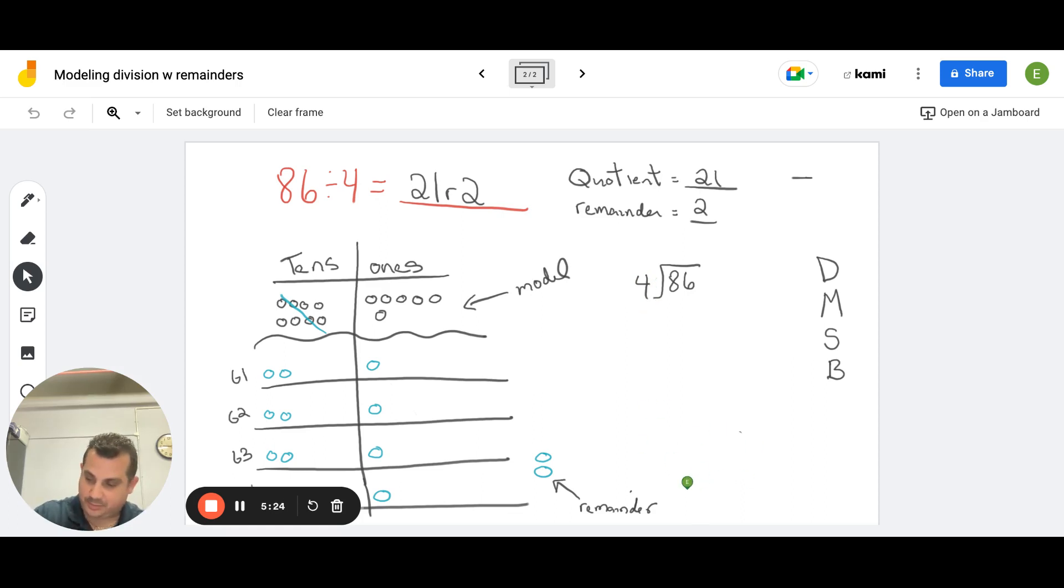So let's do our steps. Our first step here is divide. We're going to do 8 tens divided by 4, which is what we did over here. 8 tens divided by 4, which gave us 2 tens. So 8 divided by 4 is 2 tens. So we divided. Now we're going to multiply. 4 times 2 is 8. Now we have to subtract. 8 minus 8 is 0.